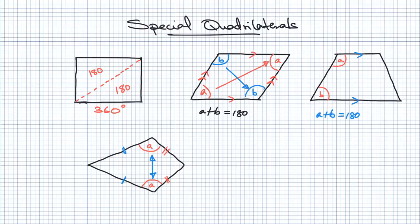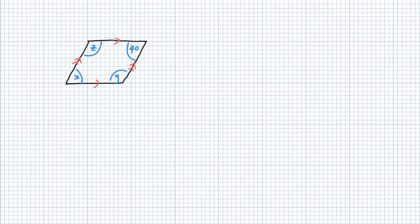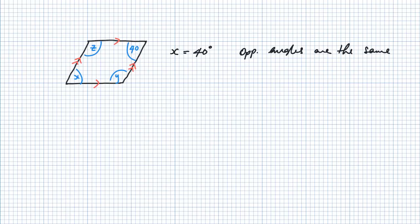Now we'll move on to a few questions. On this first example, let's find the angles in alphabetical order. We'll start by finding x. This is a parallelogram, and from the rule about parallelograms, the opposite angles are the same. So straight away we can say x is equal to 40 degrees, because the opposite angles are the same.